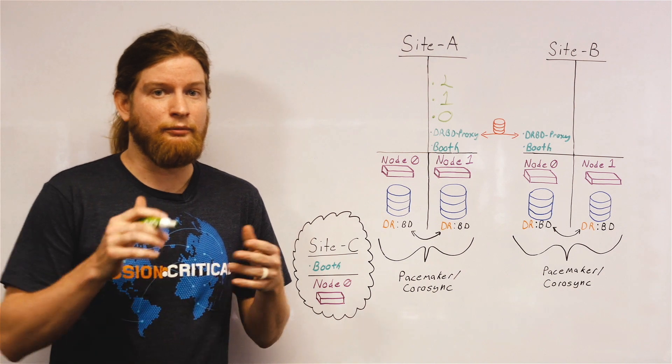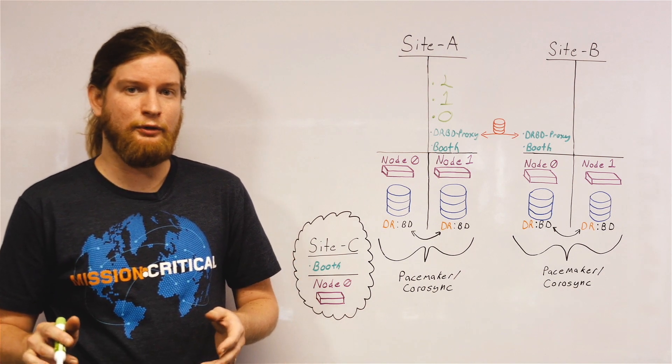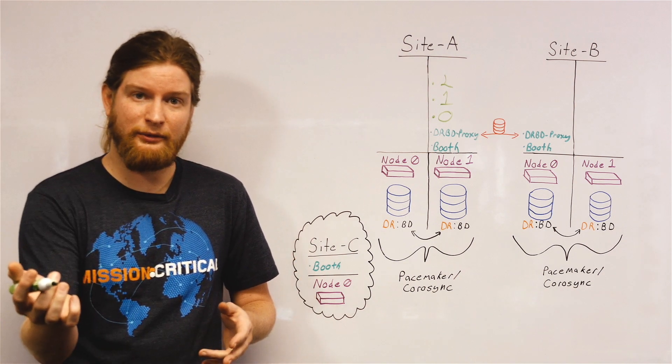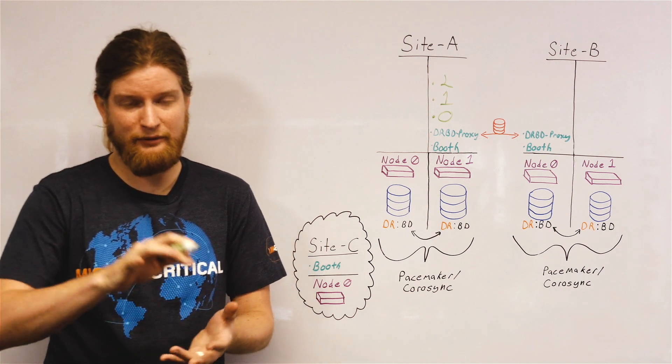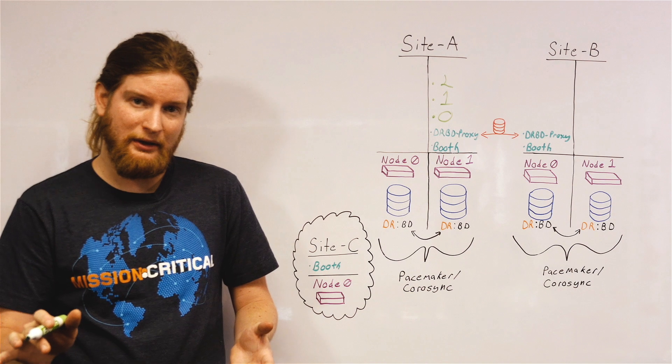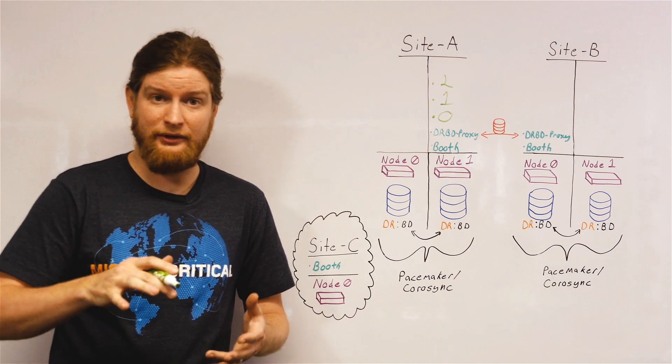Pacemaker needs redundant links in order to provide fencing that works well, in order to segregate things like your replication network from your application network, and to provide services for Corosync.